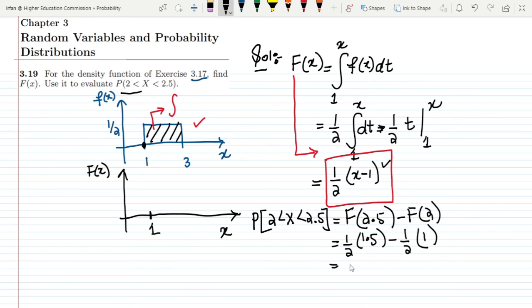So now taking it out and now 1.5 minus 1. So ultimately what it will give me, this is 1.5 minus 1 this will be 0.5 so ultimately I will get here 1/4 which is the solution of this part.